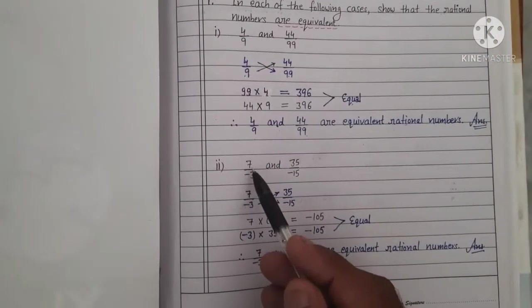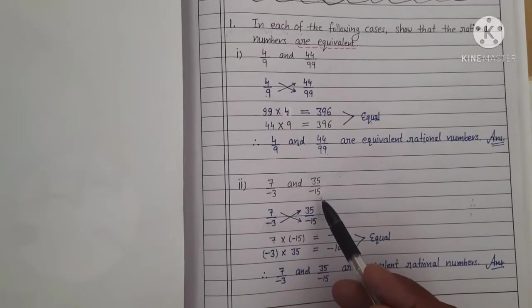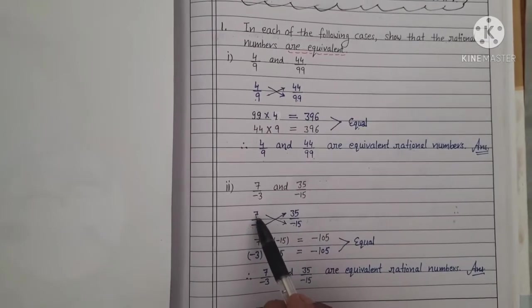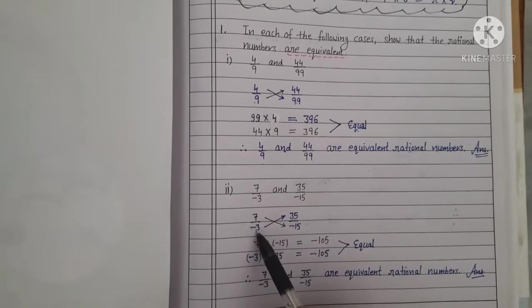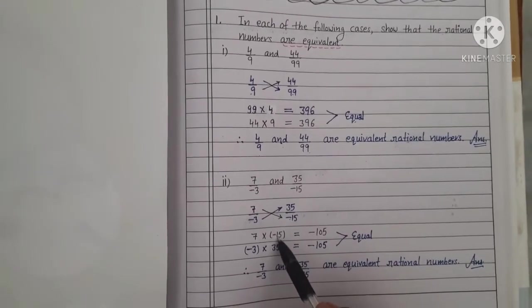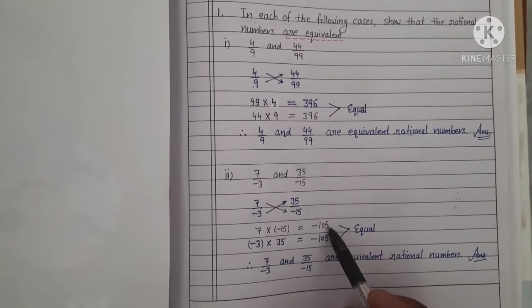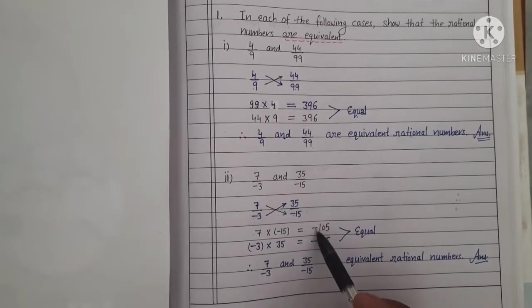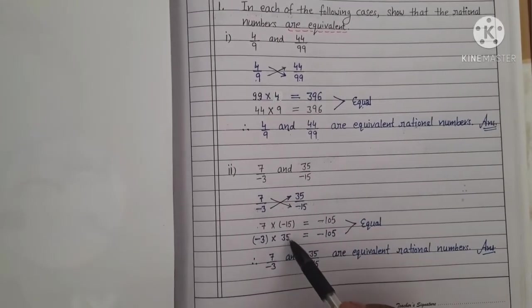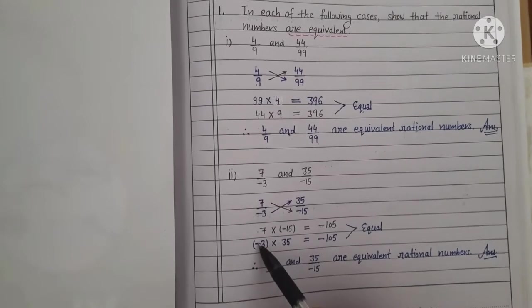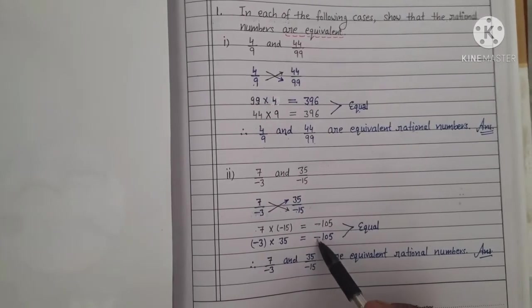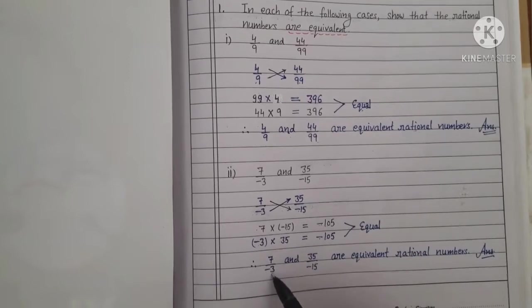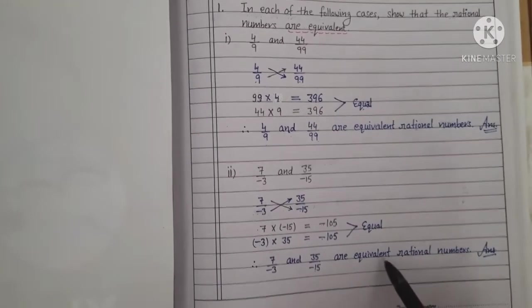Part second: 7 upon minus 3 and 35 upon minus 15. Again, we do the cross product. Minus 15 ko 7 se multiply karenge — answer dega minus 105. Similarly, minus 3 ko 35 se multiply karenge — answer bhi minus 105. Negative ko positive sign se multiply karenge to negative sign saath rahega. Both values are again equal. Therefore, 7 upon minus 3 and 35 upon minus 15 are equivalent rational numbers.